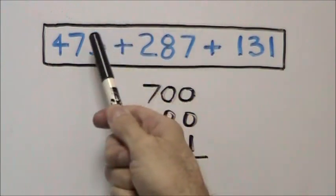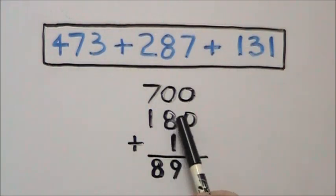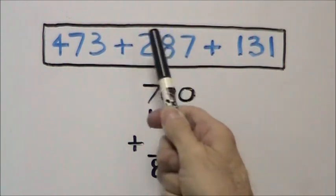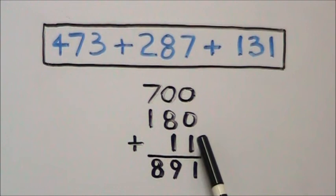Go to your tens column, 70 plus 80 plus 30 gives you 180. And then your ones column, 3 plus 7 plus 1 to get 11. Add up all your numbers and you get your answer of 891.